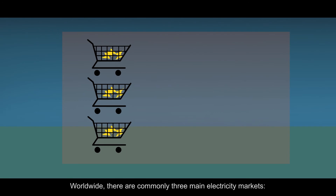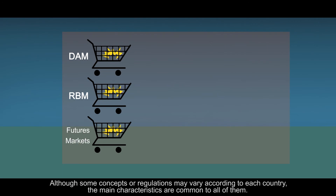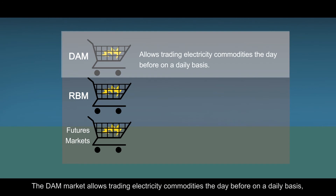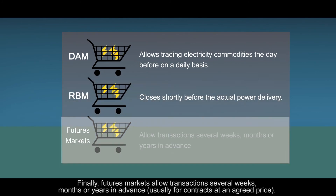Worldwide, there are commonly three main electricity markets: the day-ahead market, the real-time balancing market and futures markets. Although some concepts or regulations may vary according to each country, the main characteristics are common to all of them. The day-ahead market allows trading electricity commodities the day before on a daily basis, while the real-time balancing market closes shortly before the actual power delivery. Finally, futures markets allow transactions several weeks, months or years in advance.